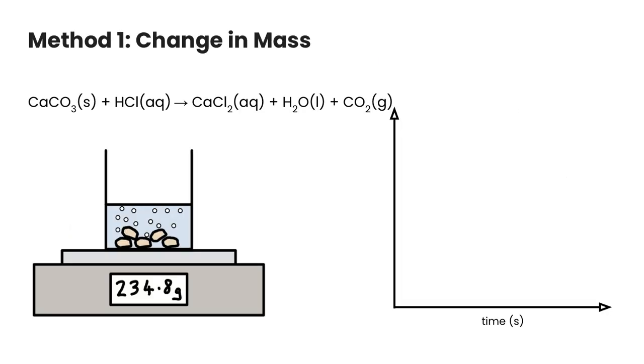So the first method we can use is a change in mass. If we take this example here where we take calcium carbonate, so limestone, and we react it with an acid, we're going to form calcium chloride, we're going to form water, and then we're going to form carbon dioxide gas. So if we use the law of conservation of mass, we know that over time when this reaction is happening...